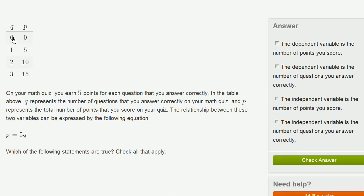And you can see that in the table. If Q is 0, if you got no questions right, you get 0 points. If you got no questions right, 5 times 0 is going to be 0. If you get one question right, 1 times 5 is 5. You get 5 points per question.